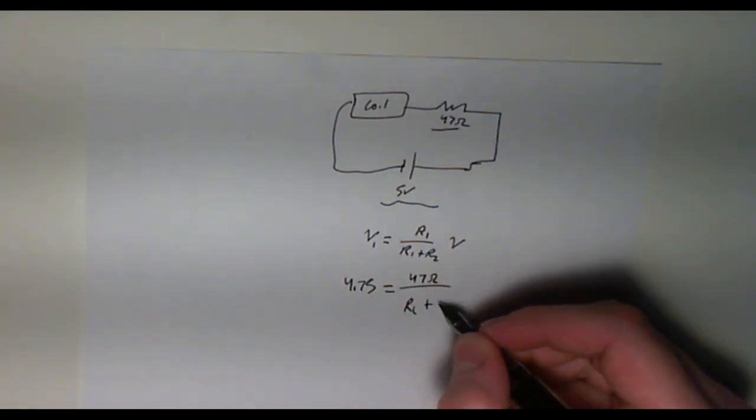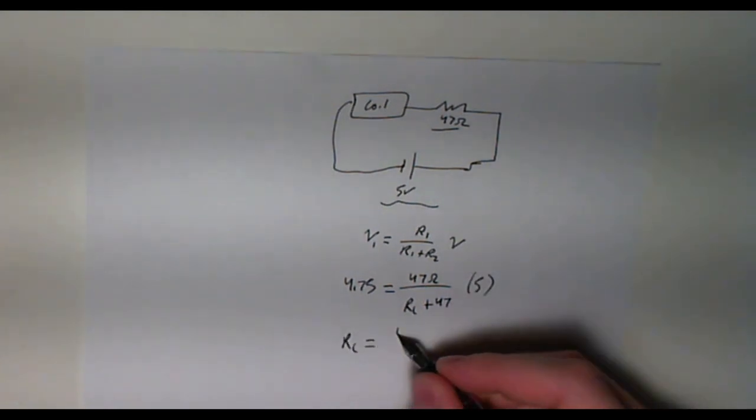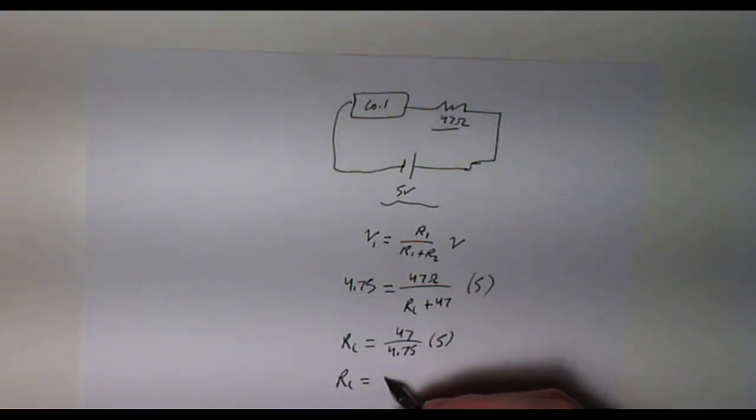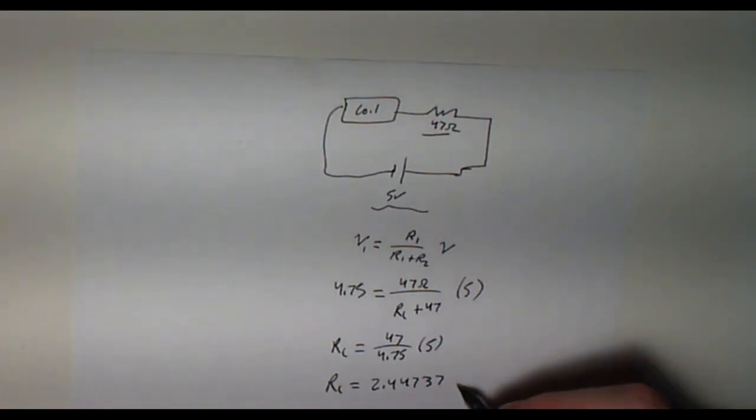Now putting that into our equation, we can solve for the resistance of the coil. Plugging that in gives the resistance of the coil to be approximately 2.44737 ohms.